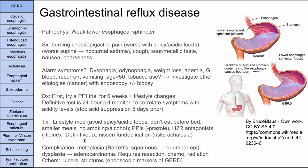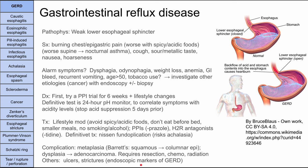A complication of GERD is metaplasia — cells changing form because they've been constantly assaulted with acid. This is called Barrett's esophagus, when the squamous cells at the bottom of the esophagus change into columnar epithelium. That can lead to dysplasia and then adenocarcinoma, requiring resection, chemotherapy, and radiation. GERD can also lead to strictures and ulcers, which are considered endoscopic markers of GERD. If endoscopy reveals ulcers and strictures in a reflux patient, you can confidently diagnose GERD.